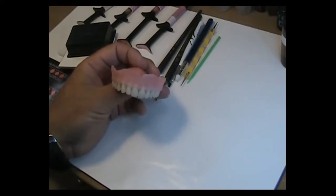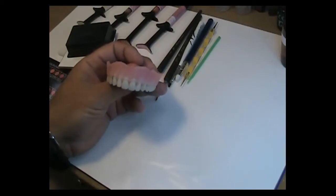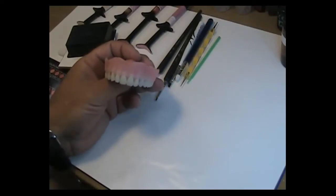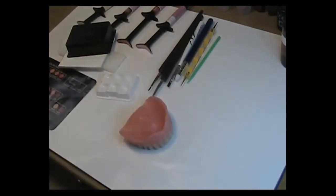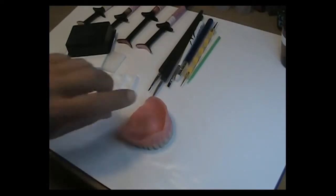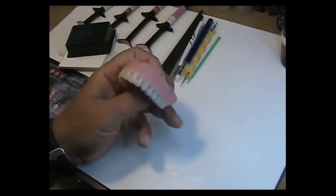Once I have it all smoothed and pumiced the way I like it, the next step would be to air abrade the entire area that will be receiving the Gradia gum composite material. The type of material I use for air abrasion is the Renfert, 50 micron Cobra aluminum oxide.